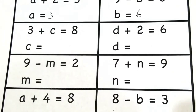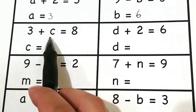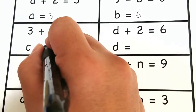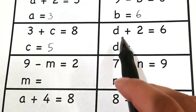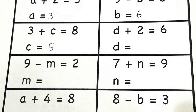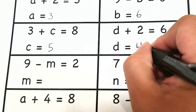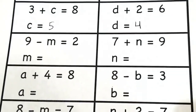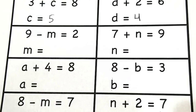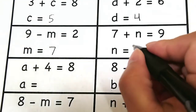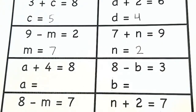Let's check your answers and see how you did. We have three plus C — what is C to make eight? C will be five. Did you get that answer? Next: something plus two equals six, that would be four. Nine minus what will give us two? Nine minus seven equals two. And seven plus two will give us nine.